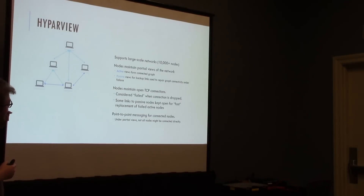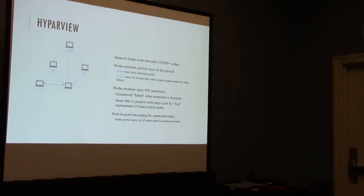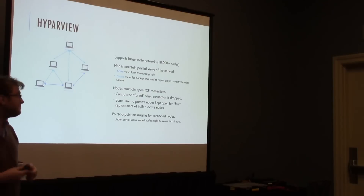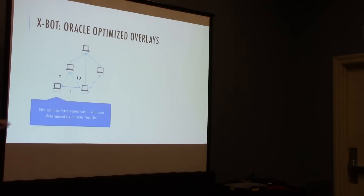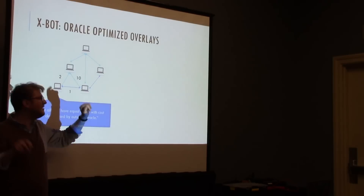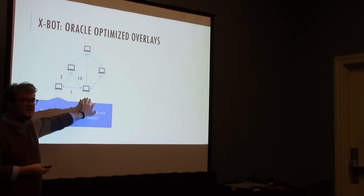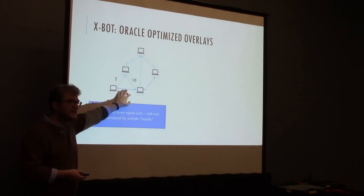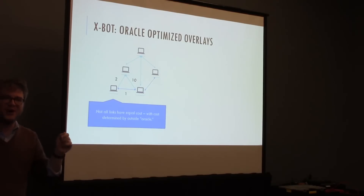For point-to-point messaging, if two nodes aren't directly connected, we need a mechanism to forward messages. Assuming the HyparView overlay, not all links have equal cost — some links have cost 10, cost 2, cost 1. These cost metrics can be derived from round-trip time via background pinging. If we know the network distance costs, we can optimize the graph to send messages across it more quickly by performing optimization passes.